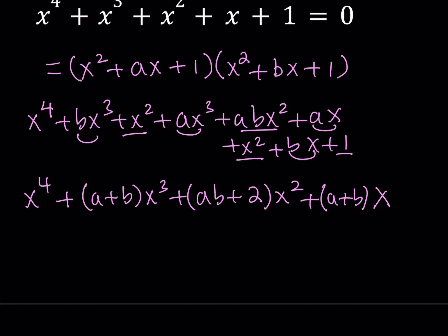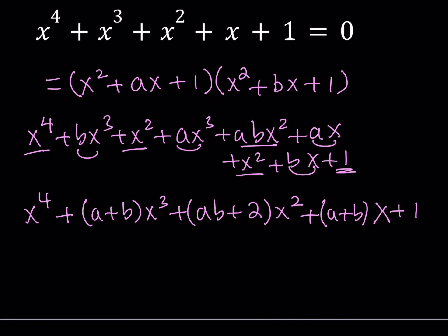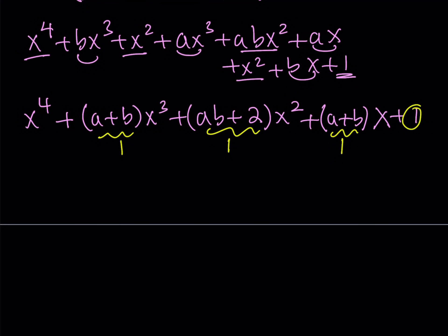Finally we have a constant of one. Now when you set this equal to the original equation, the coefficients must match. The coefficient of x cubed is one, so a plus b equals one. The coefficient of x squared is also one, so ab plus two equals one, which means ab equals negative one. And a plus b appears again for the x term, which is also one — verified.